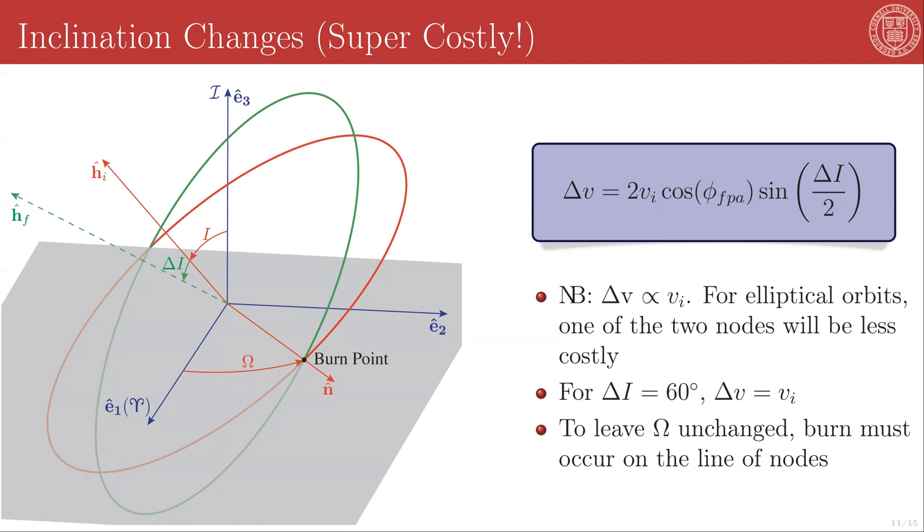The reason for that is because of this delta V expression. We are once again using an impulsive burn model, so our final orbit intersects with our initial orbit. If we are trying to only change the inclination and leave the longitude of the ascending node unchanged, the burn has to happen at the line of nodes. The line of nodes of the final orbit has to match the line of nodes of the initial orbit.